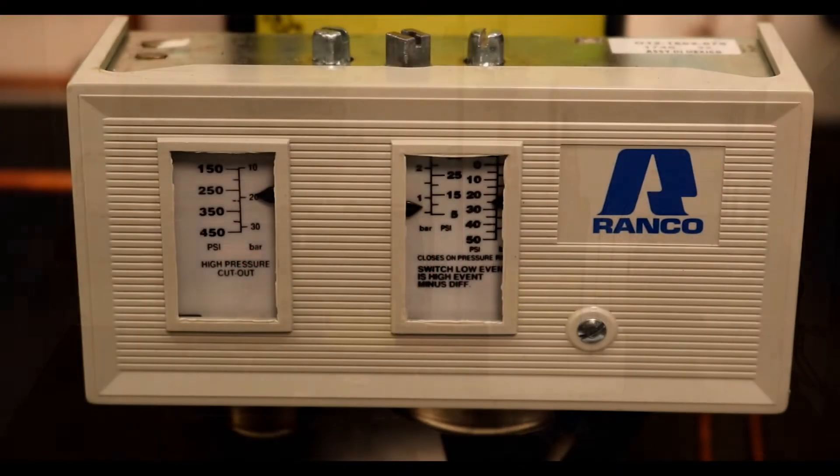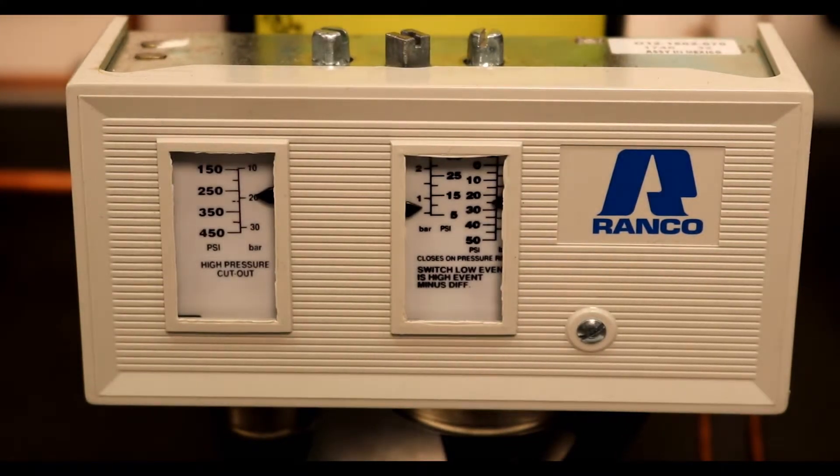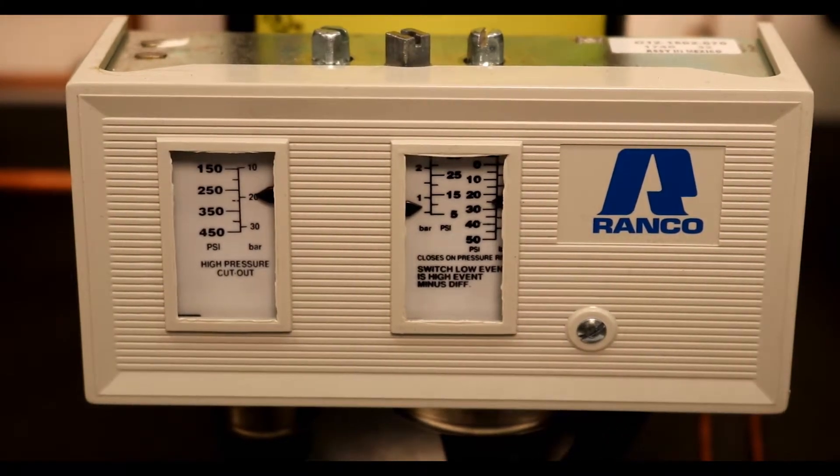A dual high-low pressure cut-out is wired in the circuit at all times to prevent damage to the compressor.